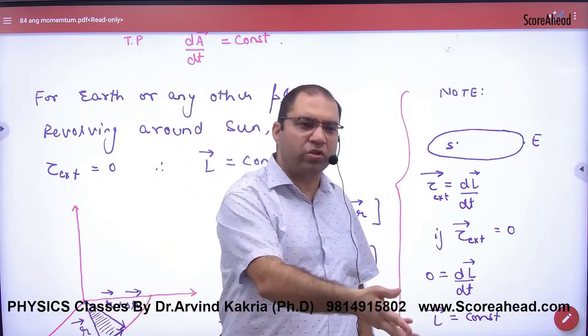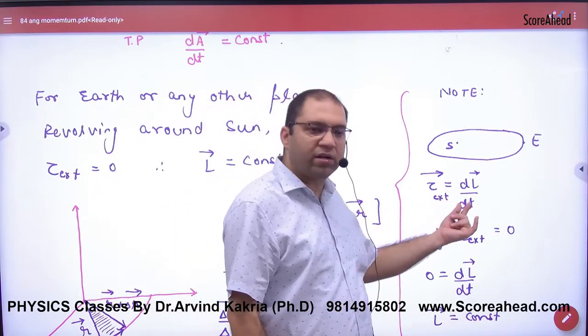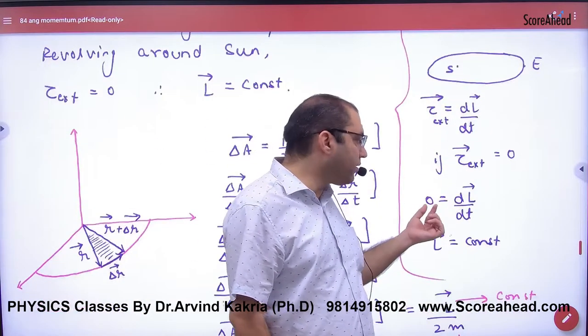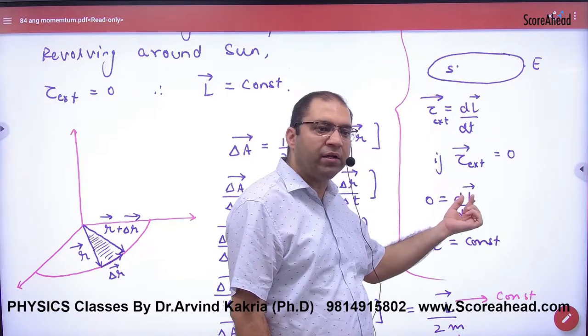There are forces of internal gravitation that are floating, so torque is external dL by dt. We didn't put external torque, so no external torque is applied, so Earth's or any planet's L is constant.